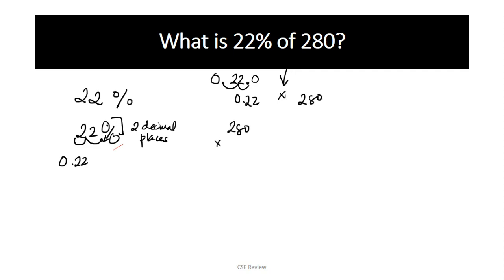The traditional method is 0.22 times 280. But my suggestion, if you're not that good at multiplication or carrying numbers, and to do mental math, just break down the 22%. 22% can be summed up as 10 plus 10 plus 2, because 10 plus 10 plus 2 equals 22.